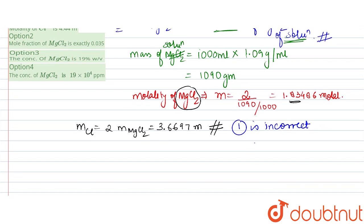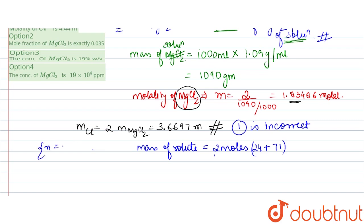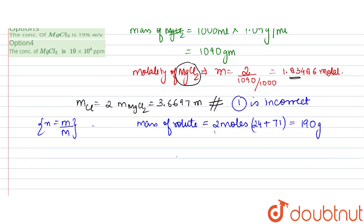Next, the mass of solute: we have 2 moles of MgCl₂. The molar mass of MgCl₂ is 24 (Mg) + 71 (Cl₂) = 95 g/mol. Since mass = moles × molar mass, mass of MgCl₂ = 2 × 95 = 190 grams.